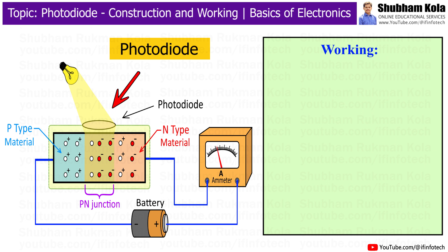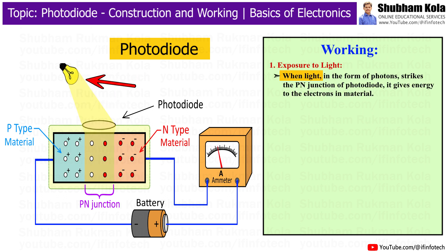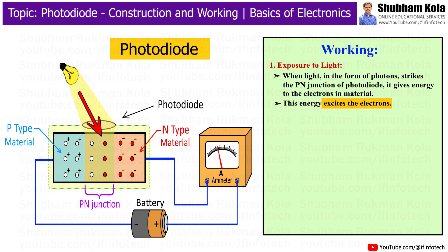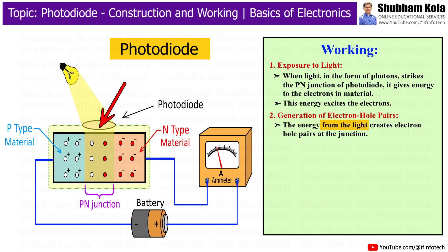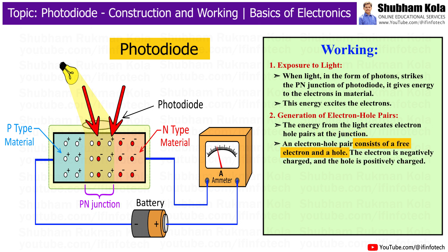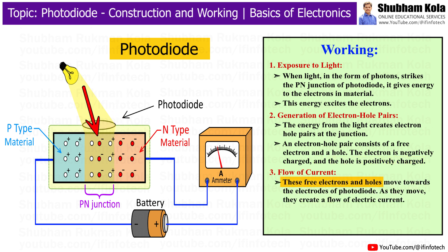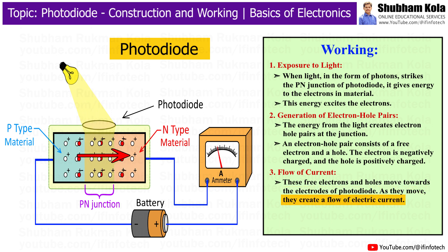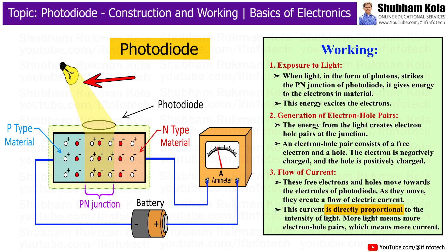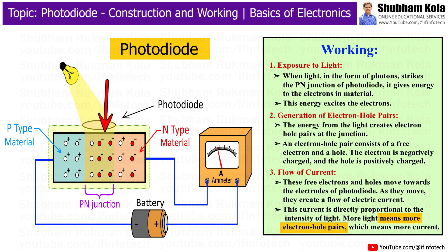Now we will see how a photodiode works. When light, in the form of photons, strikes the p-n junction of the photodiode, it gives energy to the electrons in the material. This energy excites the electrons and creates electron-hole pairs at the junction. An electron-hole pair consists of a free electron and a hole. The electron is negatively charged and the hole is positively charged. These free electrons and holes move towards the electrodes of the photodiode, creating a flow of electric current. This current is directly proportional to the intensity of light — more light means more electron-hole pairs, which means more current.